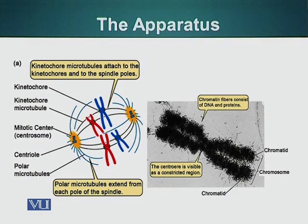The two major components are the spindle and the chromosomes. The spindle is made up of centrosome, out of which microtubules are emanating. As we have talked about, centrosome is the organelle which is responsible for formation of microtubules.